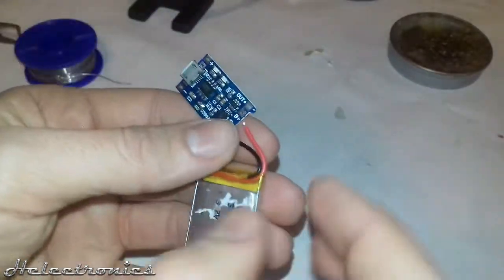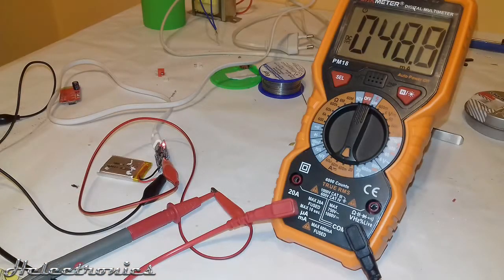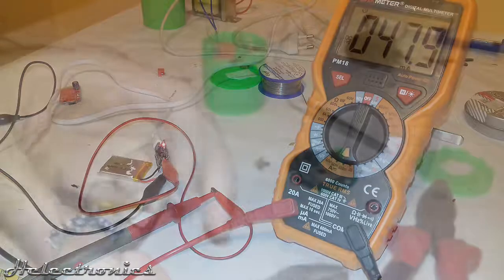Next I soldered the negative wire of the battery to the charging board and tested the charging while measuring the current with the multimeter. The charging is working. The decreasing value of current shows that the battery is getting charged.